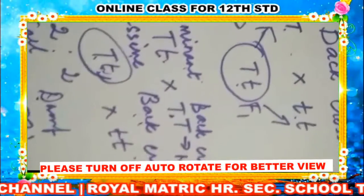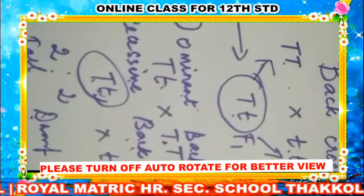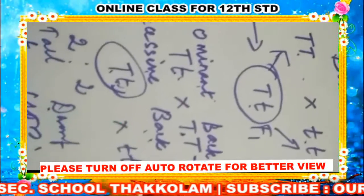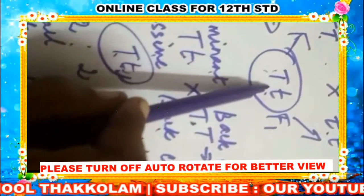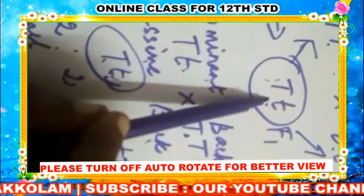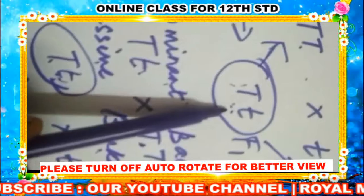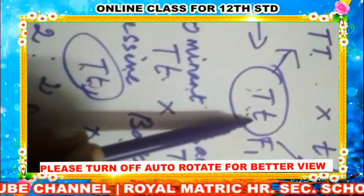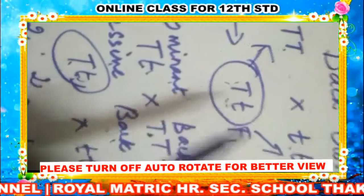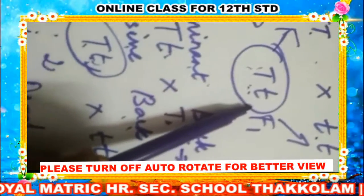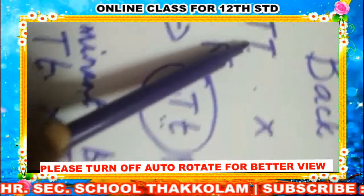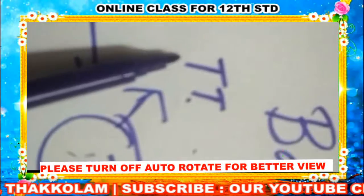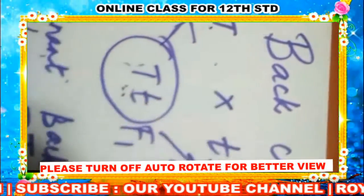Good morning students. Today we are going to see back cross. What do you mean by back cross? Back cross is nothing but crossing the F1 generation — the filial generation that we obtained after crossing the dominant and the dwarf plant. Crossing the F1 generation with either the tall plant or the dwarf plant is called as back cross.